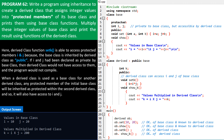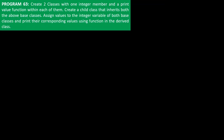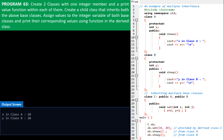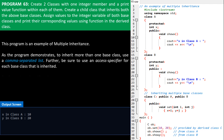In our next program, create two classes with one integer member and a print value function within each of them. Create a child class that inherits both the above base classes. Assign values to the integer variable of both base classes and print their corresponding values using a function in the derived class. Here is the program code and the output. This program is an example of multiple inheritance. To inherit more than one base class, use a comma-separated list. Be sure to use an access specifier for each base class that is inherited. For example, on line 27 we have: class C : public A, public B.